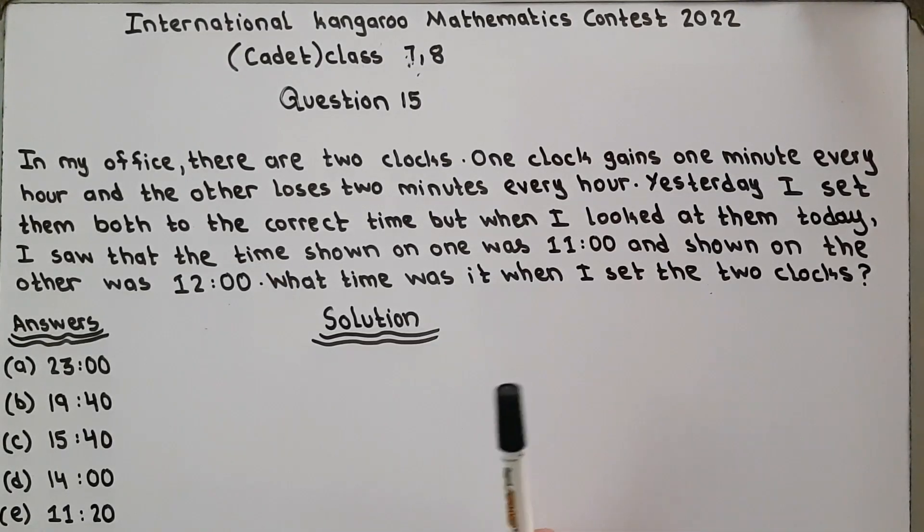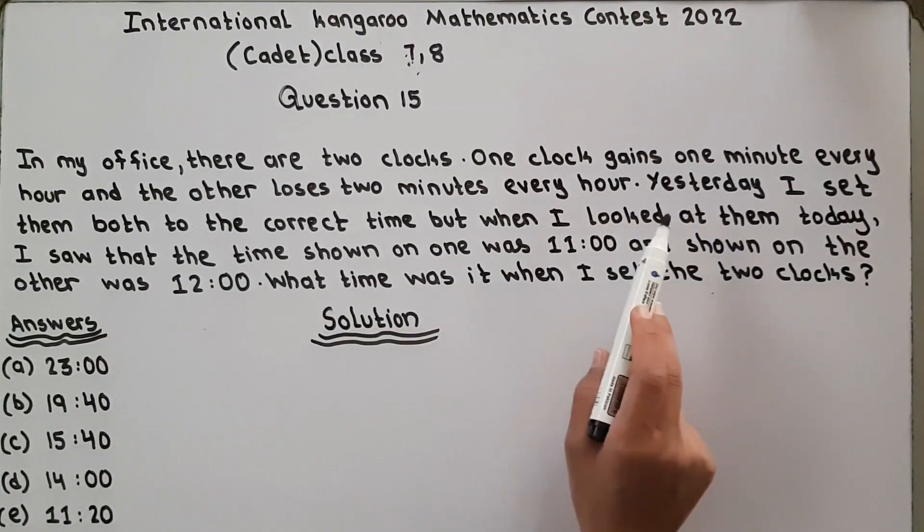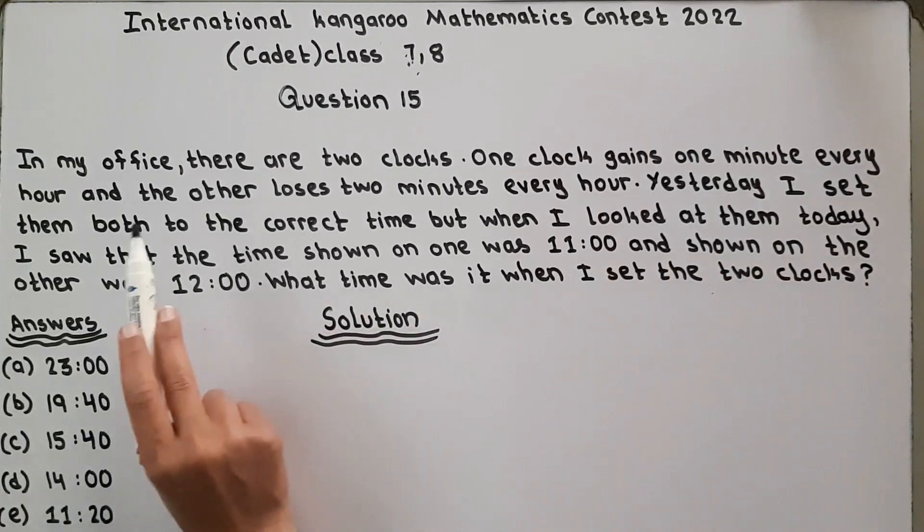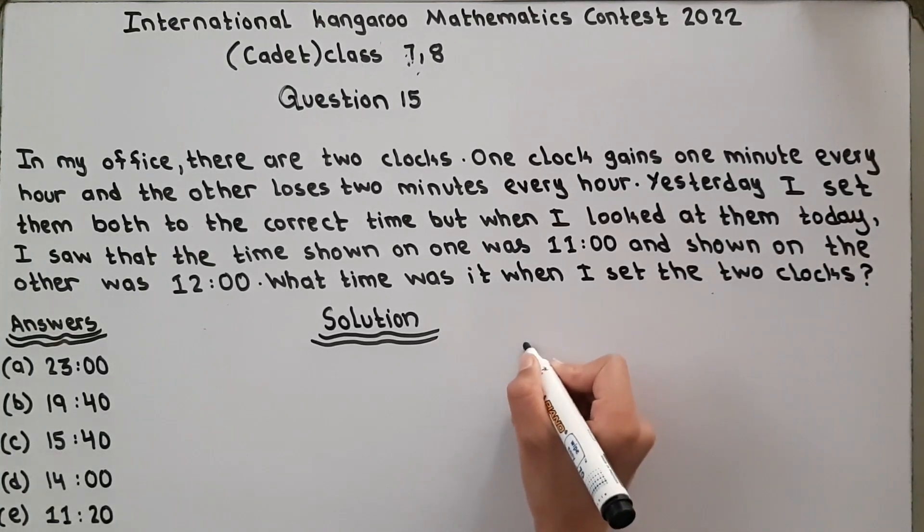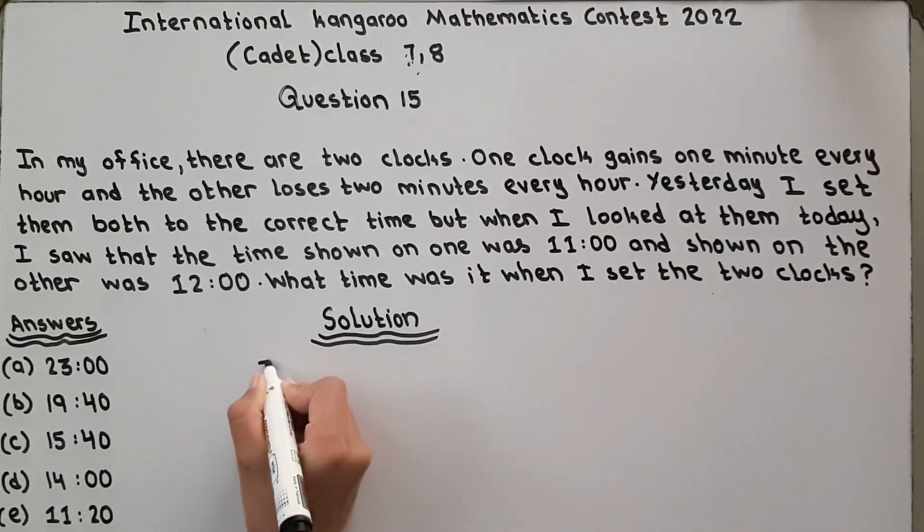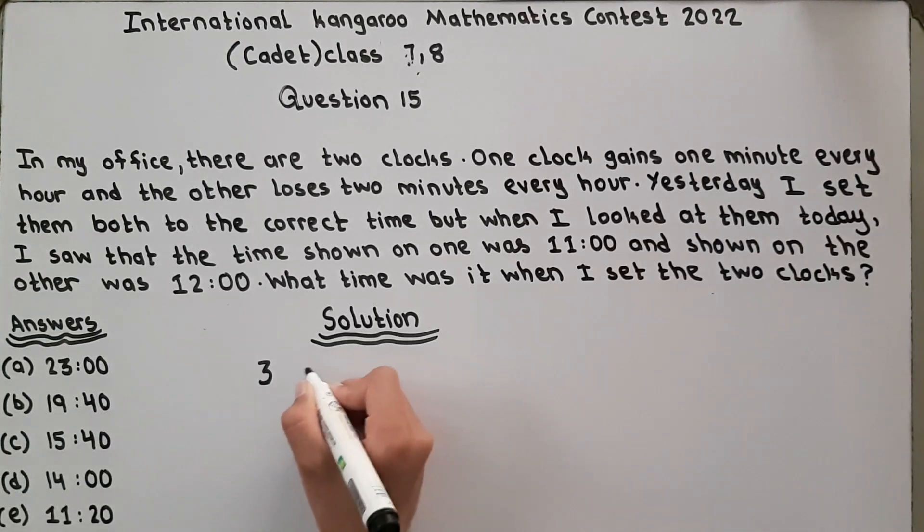So one gains one minute and the other loses two minutes, so the difference between them increases by three minutes every hour. Now we know that in one hour there are 60 minutes.